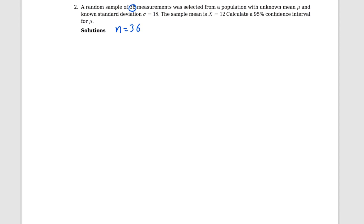Why? You know right now you only know one confidence interval, but later you will know another one — two different things. So you have to recognize which one you are going to use. Here, 36 is n, so n equals 36. And sigma, the population standard deviation, is 18.